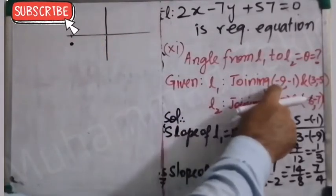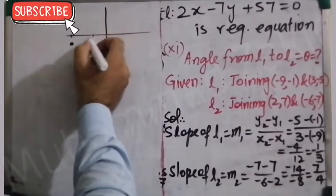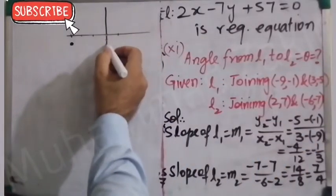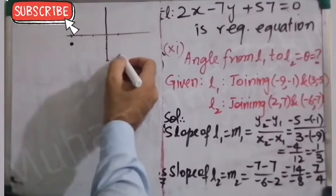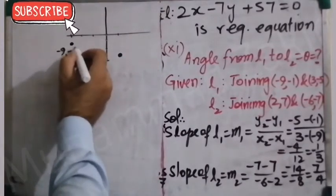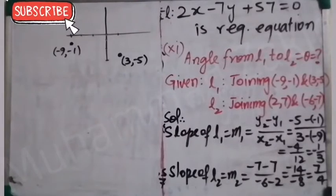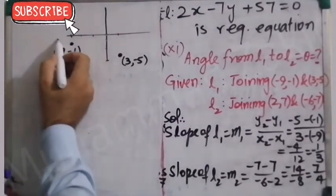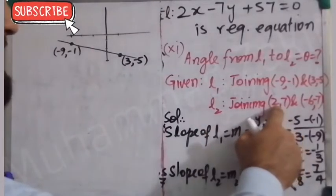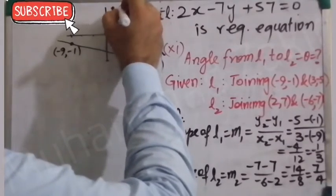The other point on L1 is (3, -5). On the x-axis, 3 is approximately here, and -5 is about here below the x-axis. So this is the point (3, -5). We join these two points and get L1. Now for L2: the point (2, 7) will be in the first quadrant — x is 2, y is 7, located approximately here.